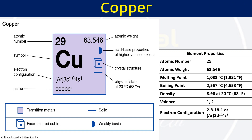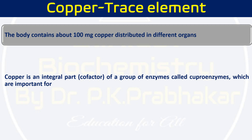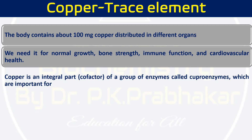Here is some basic chemistry about copper. The atomic number of copper is 29, and the electronic configuration is given here. It is a transition metal, solid in physical state, and slightly basic in nature. Copper normally exists in two valence states: plus 1 and plus 2. Our body contains roughly only 100 mg of copper, which is distributed in different tissues. We need it for normal growth, bone strength, immune function, and cardiovascular health.